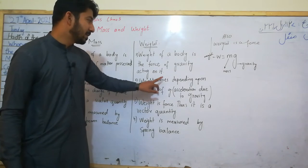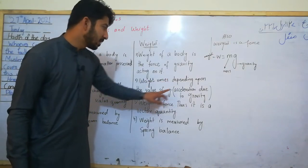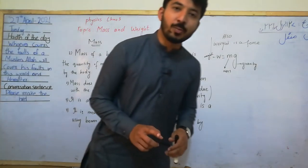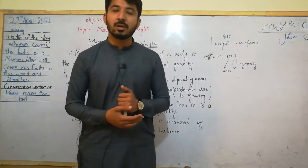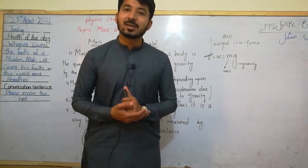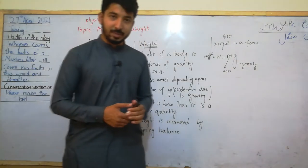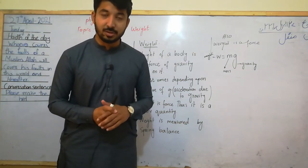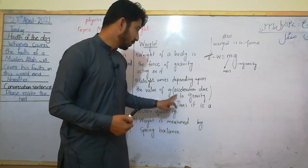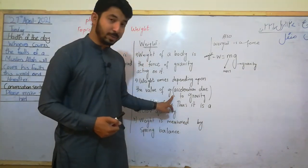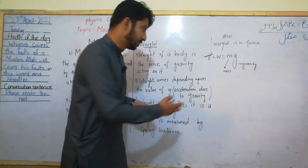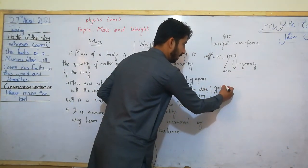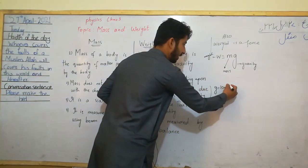Weight depends on the value of g. You know the g value? G is called gravity — gravitational acceleration. In chapter 2, the value of g is 10 meters per second squared.